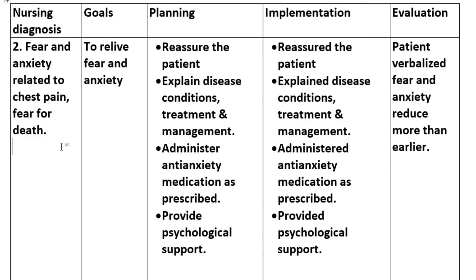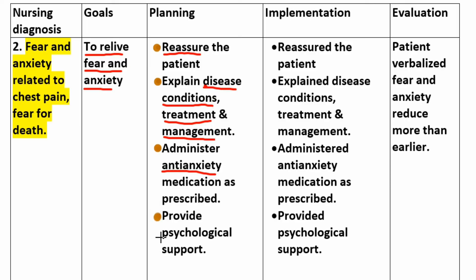Nursing Diagnosis number 2: Fear and anxiety related to chest pain and fear of death. Goal: to relieve fear and anxiety. Planning and Implementation: reassure the patient, explain disease condition, treatment and management, administer anti-anxiety medication as prescribed, and provide psychological support.